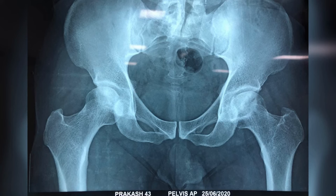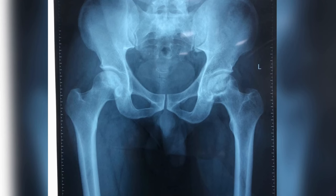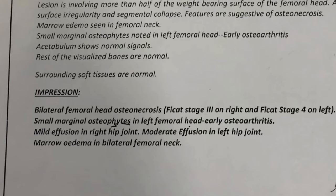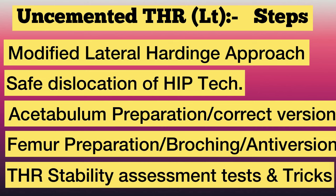A 43-year-old male presented with a history of bilateral hip pain, more on the left side. X-ray shows bilateral AVN with Ficat stage 4 on the left side, with the femoral head showing subchondral cysts, marginal osteophytes, loss of sphericity of head, joint space narrowing, and acetabular sclerosis. Plan is for uncemented THR using the modified Hardinge approach.